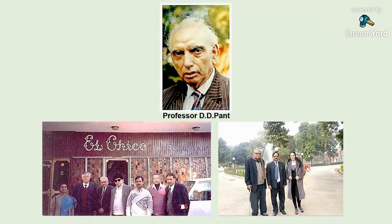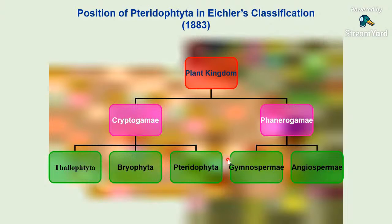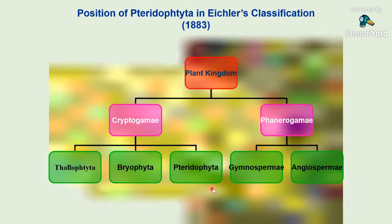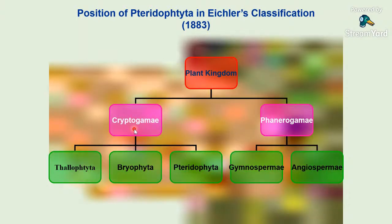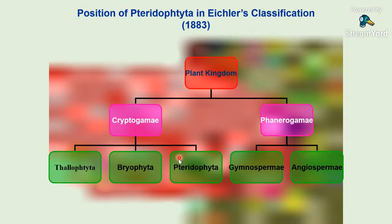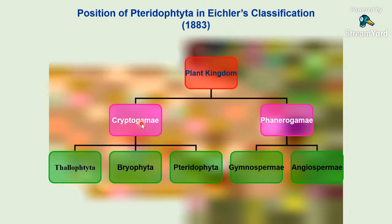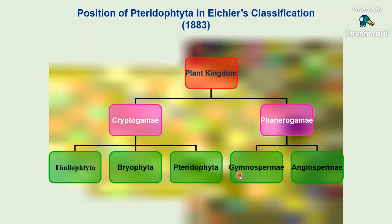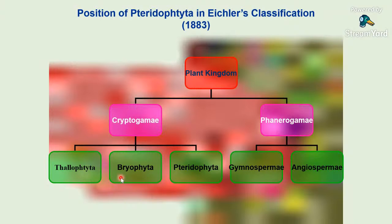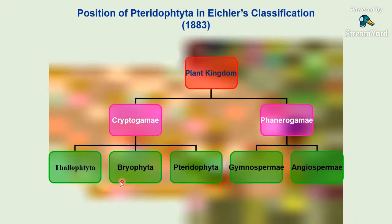You can see the systematic position of pteridophytes in Eichler's classification, which divided the plant kingdom into two sub-kingdoms: Cryptogamia and Phanerogamia. Pteridophyta is included under Cryptogamia, while Phanerogamia includes gymnosperms and angiosperms — the seed-bearing plants. From Bryophyta onward — Bryophyta, Pteridophyta, gymnosperms, angiosperms — they are all land plants.